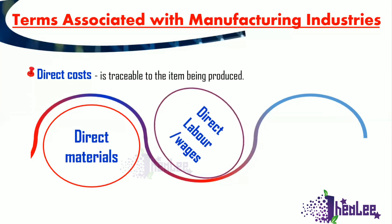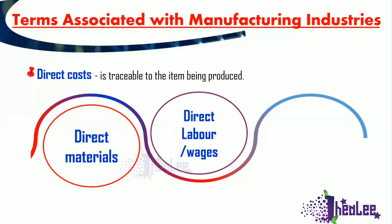Another category of direct costs is direct labor or wages. The pay given to the baker who baked that cake is referred to as direct labor or wages. In a manufacturing account question, if you see 'factory wages,' that means the pay given to the persons that directly produce the item — hands-on, getting that product ready from start to finish. That pay is referred to as direct wages.